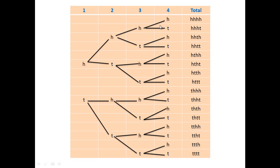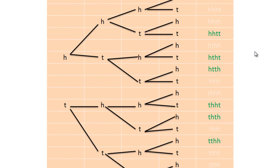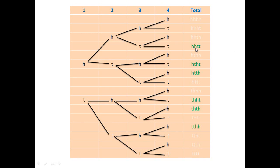For example, head-head-head-head is one combination, and head-head-head-tail is another. This is a fantastic way to visualize multi-task problems. For question 7, if you want exactly 2 heads, we find the positions with head-head in different arrangements — that gives 6 combinations corresponding to option A.